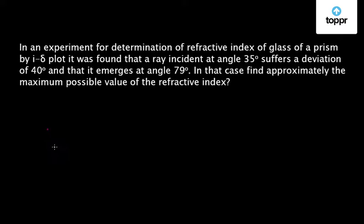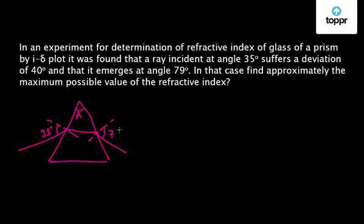Let us try to solve this problem. First, let us draw the situation given in the problem. It is given that there is a prism. Let us assume that its prism angle is A and a ray is incident at an angle of 35 degrees, and then it emerges out at an angle of 79 degrees. During this, it suffers a deviation of 40 degrees.